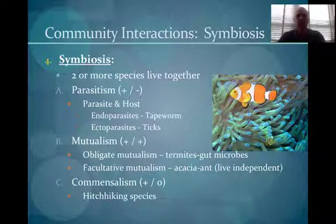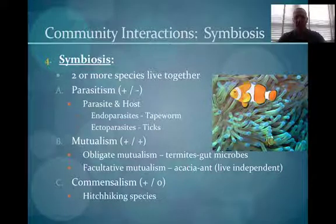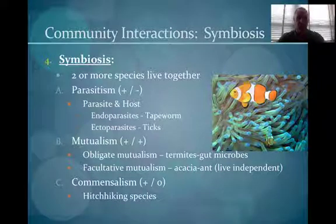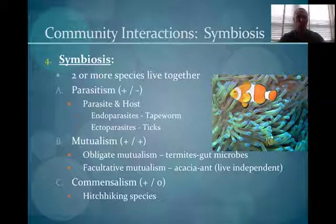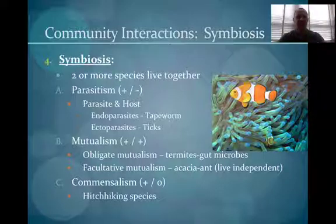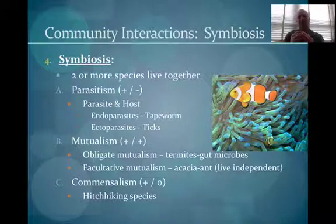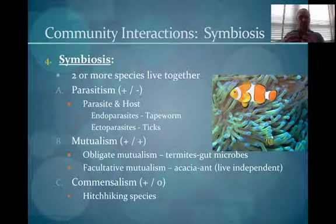Next is mutualism, where both organisms benefit — such as the sea anemone and clownfish. The clownfish gets protection; the sea anemone gets food because prey chases the clownfish back to it. There are two types of mutualism. Obligate mutualism means the relationship is required for survival — such as termites having microbes in their gut to break down wood; without those microbes, they would die. Facultative mutualism, like between an acacia plant and an ant, means they can live independently but survive much better together.